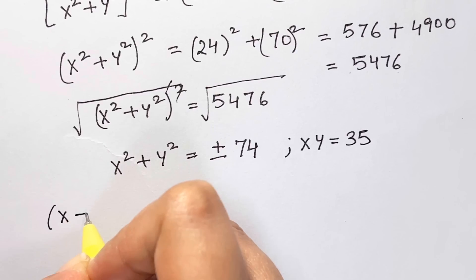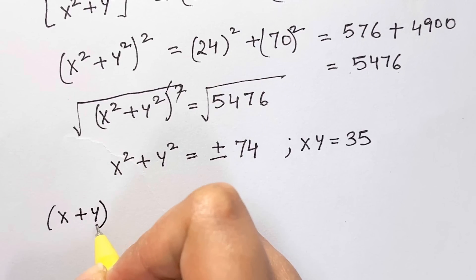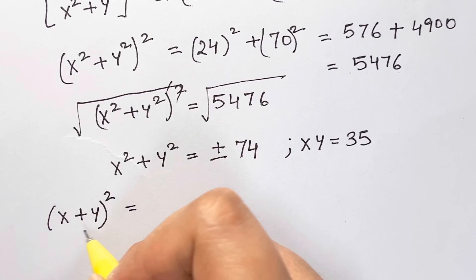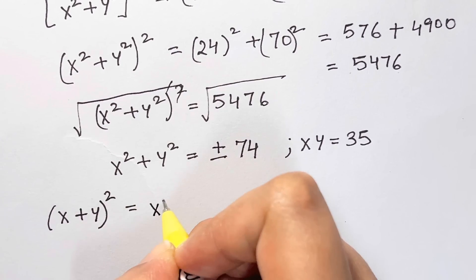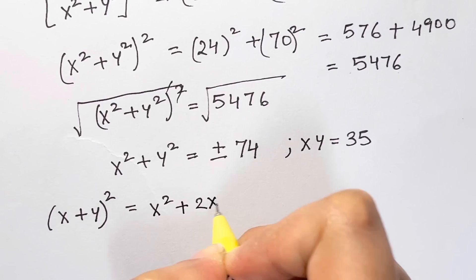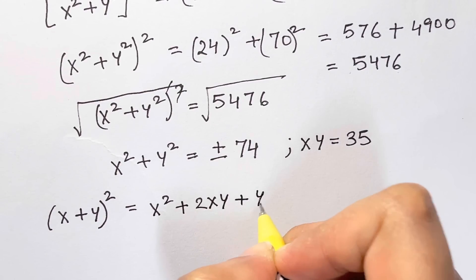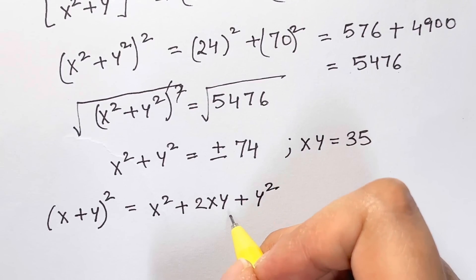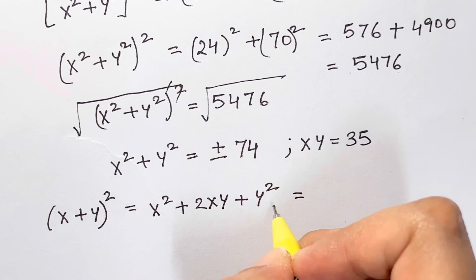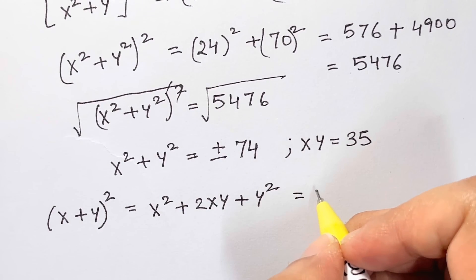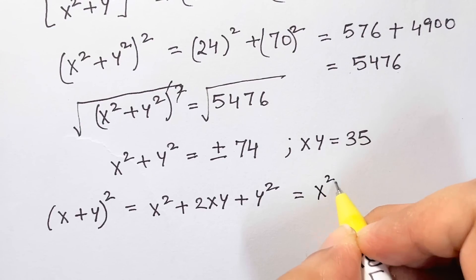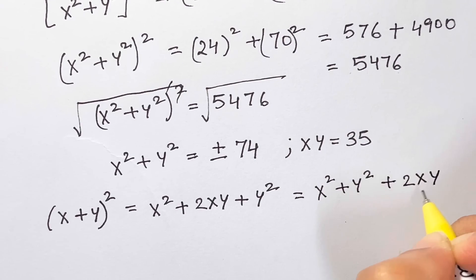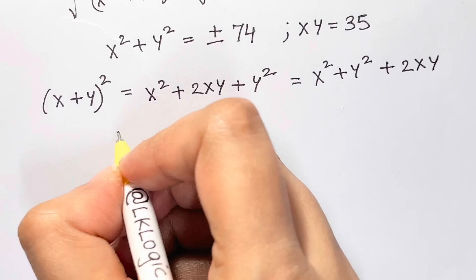We need to find x + y. So (x+y)² = (a+b)² expanded is x² + 2xy + y², which I can arrange as (x² + y²) + 2xy.